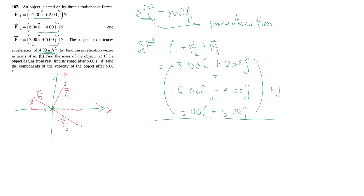I deal with all the i's separately from j's just like algebra. So minus 3 plus 6 plus 2 gives us 5i. And then we have 2 minus 4 plus 5, which gives us plus 3j Newtons.